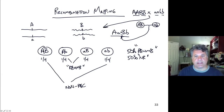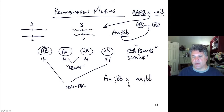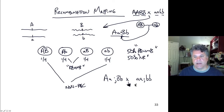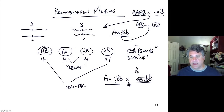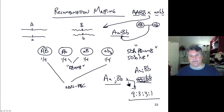We could determine what these gametes are by crossing this dihybrid — big A little a, big B little b — to a tester stock homozygous recessive for both genes. The proportions of different phenotypic offspring would reveal the gametic frequencies. We would expect a 9:3:3:1 ratio if crossed to another dihybrid, indicative of these gametes being produced in equal proportions — both recombinant and non-recombinant.